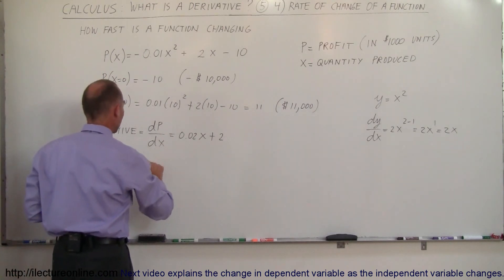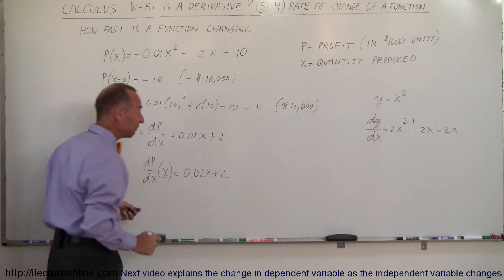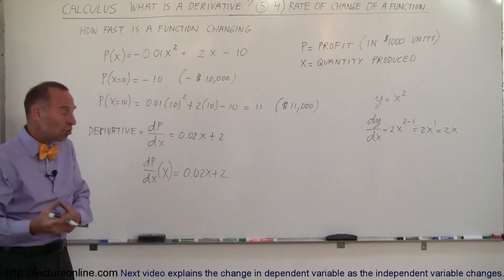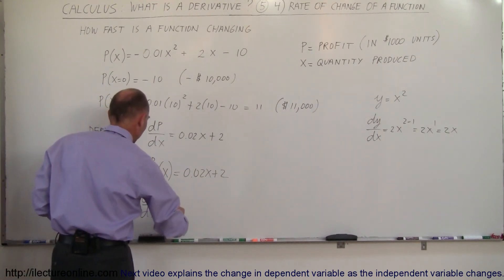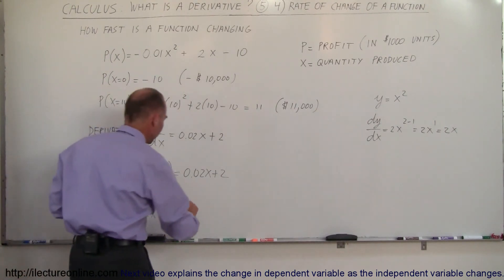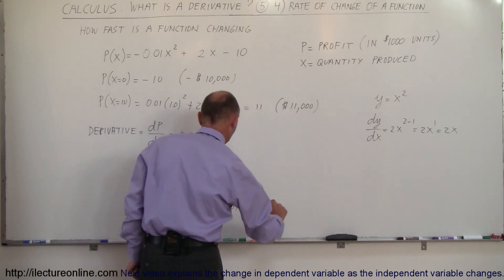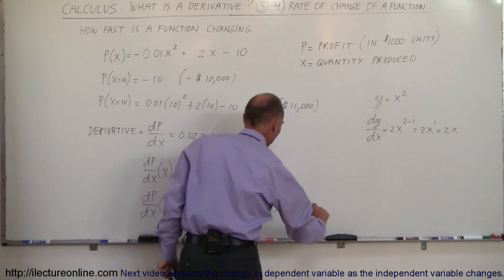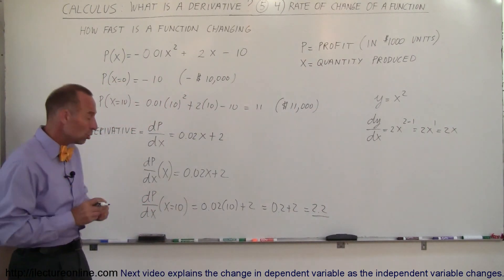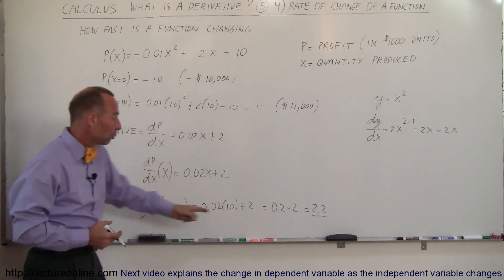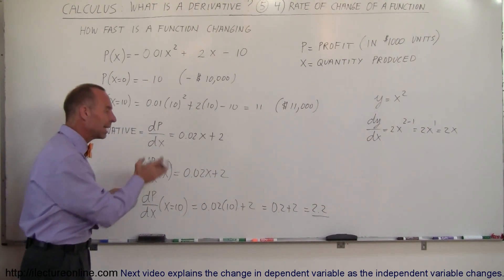So dp/dx = -0.02x + 2. If I plug in x = 10 to find how fast profit is changing when I build 10 units: dp/dx = -0.02 × 10 + 2 = 0.2 + 2... wait, that gives 2.2. In units of thousands, that means producing the 11th unit increases profit by $2,200. That's how fast profit is changing at that point.